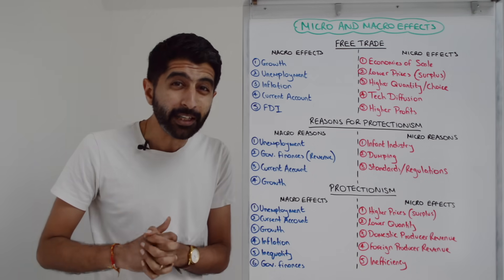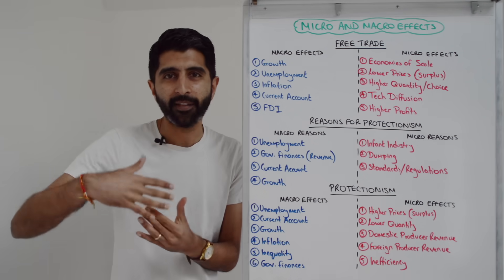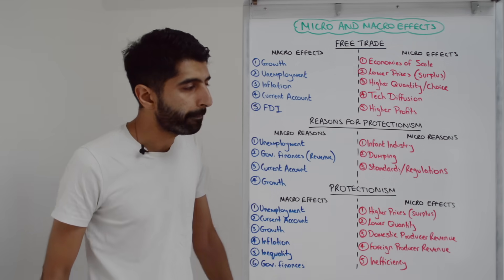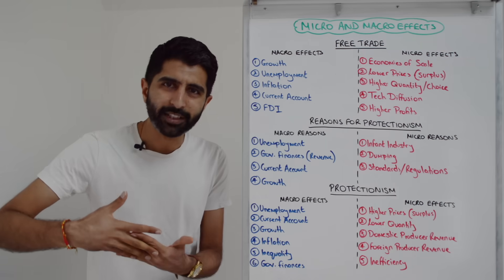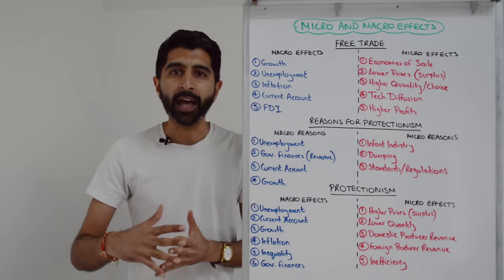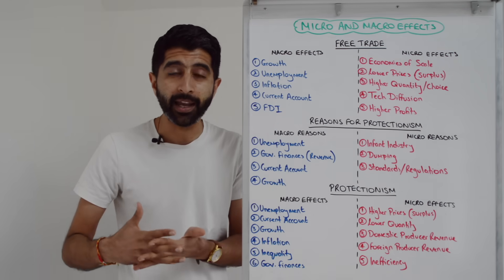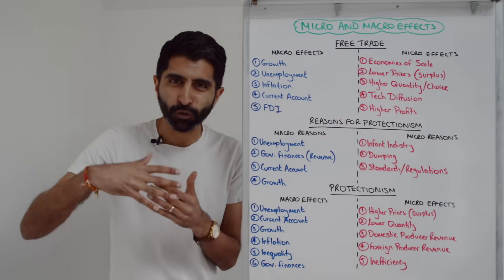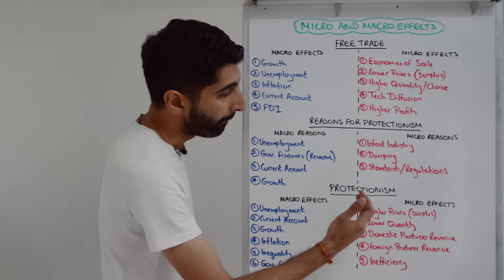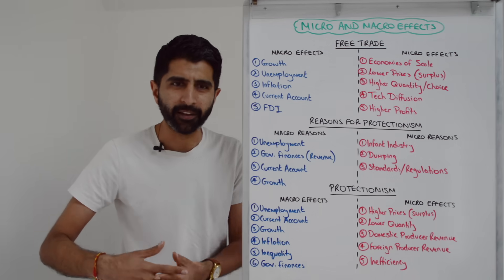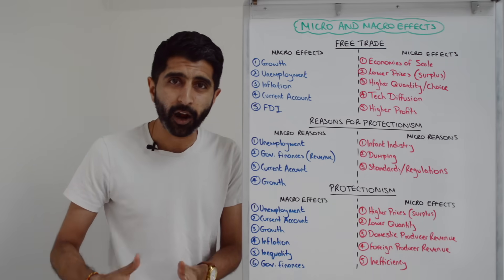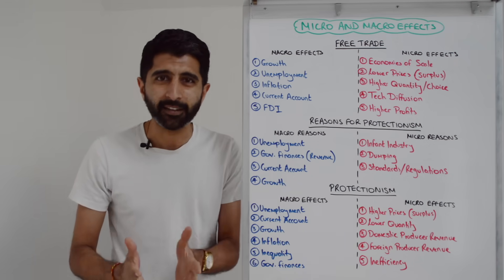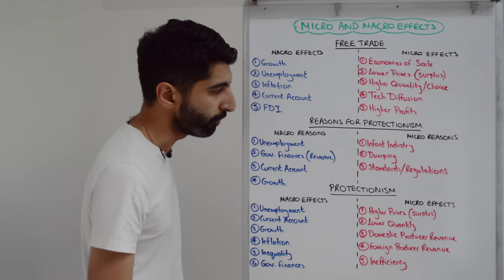Micro reasons would be the infant industry argument — for small firms in a country to grow in size, develop economies of scale, and become more competitive. To protect against dumping is another micro reason: dumping occurs when a good is sold overseas at a price below cost of production, often because of excess supply in the original country, perhaps due to government subsidies or minimum prices creating that excess supply which is then dumped abroad. There's also the standards argument — regulations to protect consumers with product standards, to protect the environment with environmental standards, protect workers with health and safety standards, and protect society generally with strict standards and regulations.